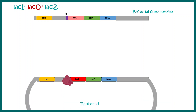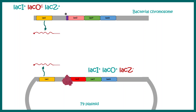In the merozygote approach, an F' plasmid was incorporated into a bacterial background with genotype lac I⁺ lac Oc lac Z⁺ — meaning it produces a functional lac repressor, has a faulty operator DNA sequence, and can produce beta-galactosidase. The F' plasmid has the genotype lac I⁺ lac O⁺ lac Z⁻, meaning lac Z cannot be transcribed from the plasmid.